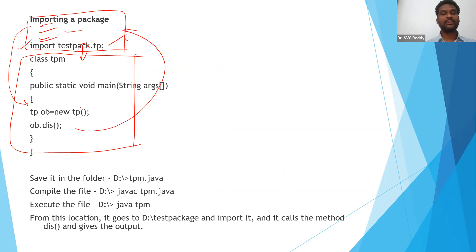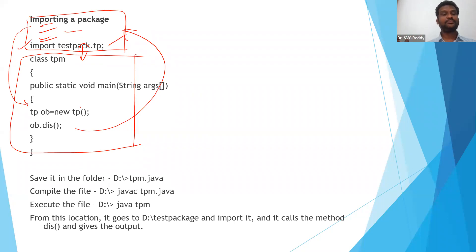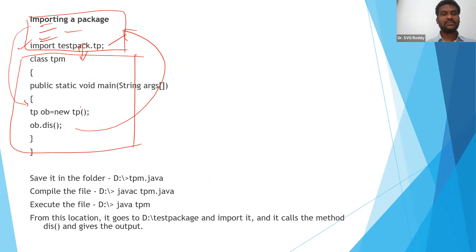Default means you don't give any access specifier — the Java system will allow access from the same program only. We have public, private, protected, and default. Protected means it allows access from the same program's subclasses, and also subclasses of other programs. We have seen subclasses in the concept of inheritance. So that's the thing about access specifiers — that's why it should be public; otherwise, it cannot be accessed from ob.display.